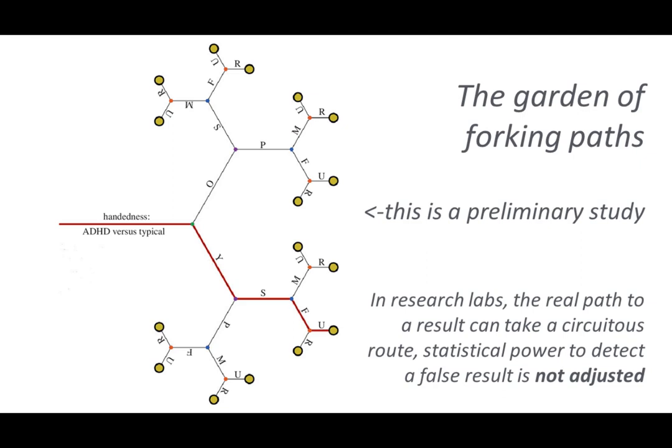The next thing I wanted to tell you about is the garden of forking paths. This is a fallacy that we all suffer from in research labs. We might have a hypothesis — for this example, it is handedness in ADHD — that there is a difference in handedness levels in ADHD patients. The first study basically leads us down a path to a second study, and a third study, and a fourth, and a fifth.